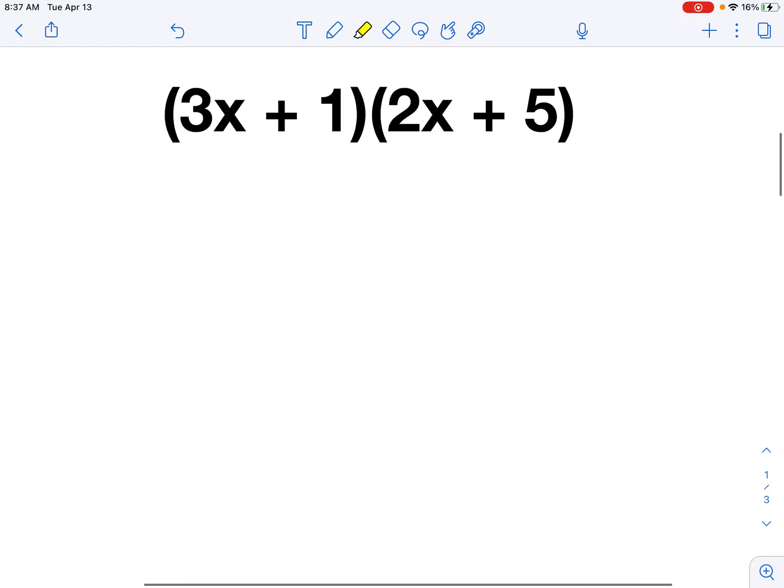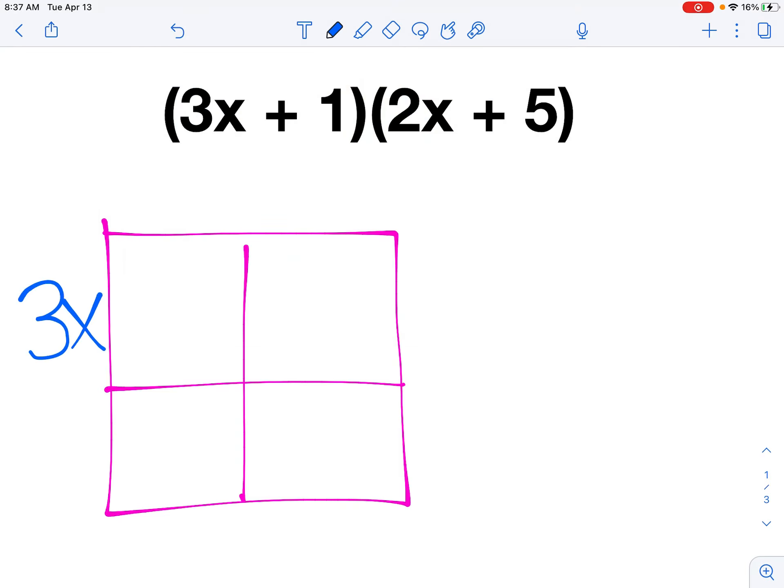All right, this is the binomial times the binomial that's on your worksheet, so let's set this one up together. I'm going to set up my window first. And I'm going to put one binomial on each side. So I have 3x plus 1, and I have 2x plus 5. So set this up on your paper and pause the video right here, and see if you can fill in the four pieces of that window.